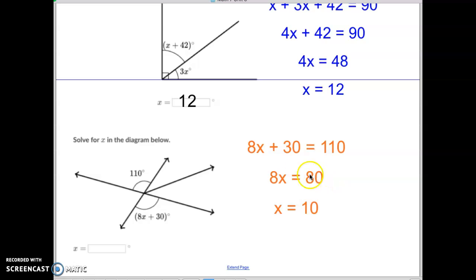So I have 8x equals 80. Now, how do I get rid of the 8 that's being multiplied by the x? I divide by 8. But whatever I do to one side, I do to the other side. Divide both sides by 8. And I get x equals 10. So that's how you do those type of equations.